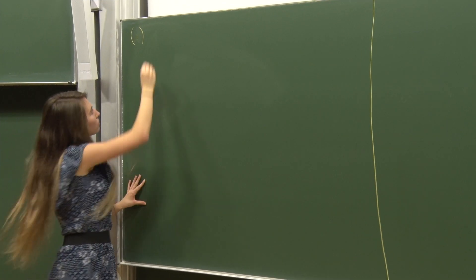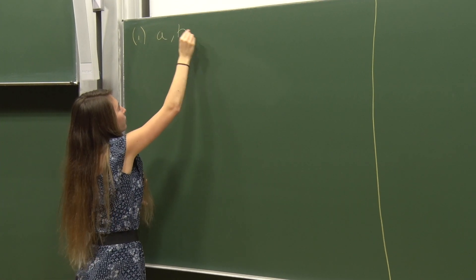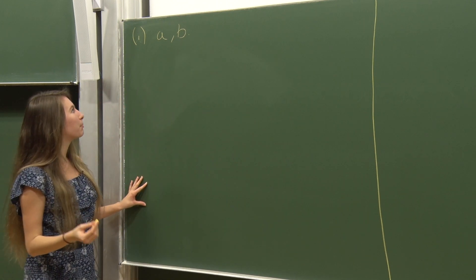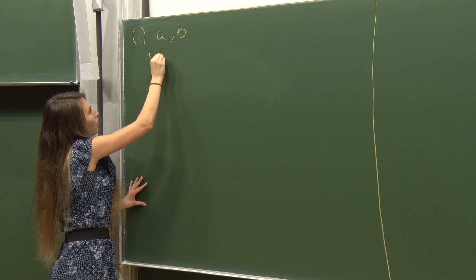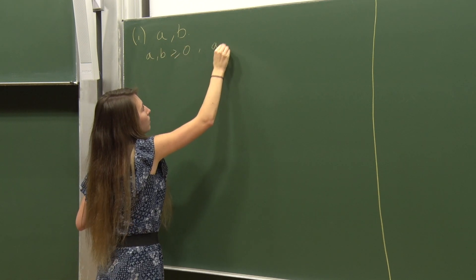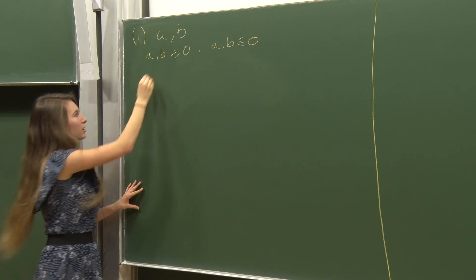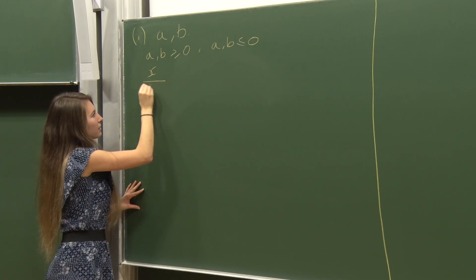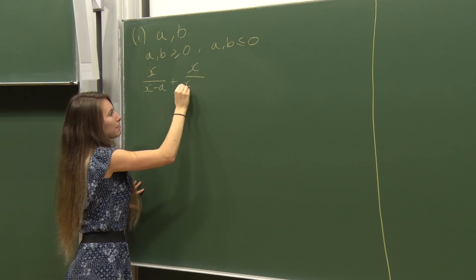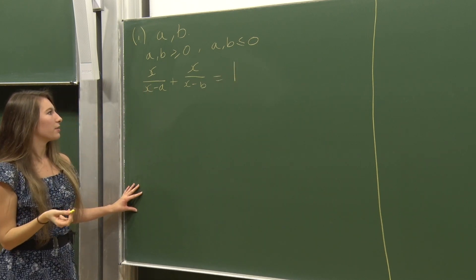We've got two non-zero distinct real numbers a and b, and we're asked to show that if they're both non-negative or both less than or equal to 0, then the equation x/(x-a) + x/(x-b) = 1 has exactly two real solutions.